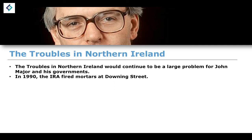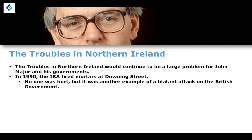In 1990, the IRA fires mortars at Downing Street. Luckily, no one was hurt because the mortars landed in the back garden of Downing Street, and they were in cabinet at the time this attack took place. But despite the fact that no one was hurt, it's another example of a blatant attack on the British government.